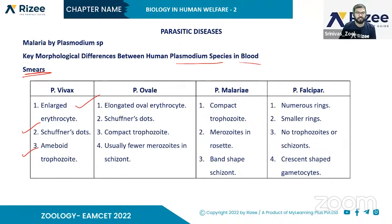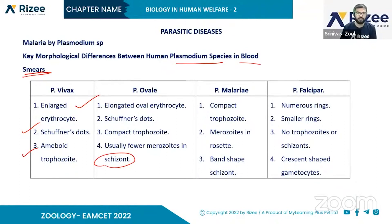Amoeboid trophozoites are also presented in Plasmodium ovale, usually with merozoites in Schüffner's dots. In Plasmodium malariae, compact trophozoites are presented, with merozoites in rosette type. Band-shaped trophozoites are also presented in Plasmodium malariae.